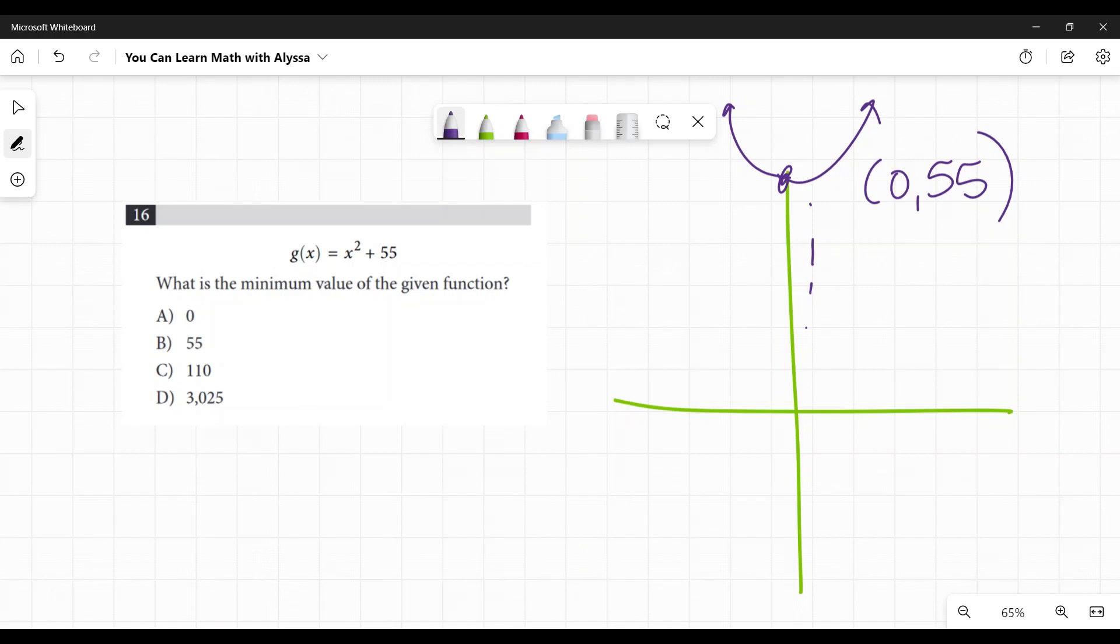Nothing else is changing. The function isn't flipping upside down. There's no negative in front of it. It's just moving up 55. So the minimum value there, the y value is b, 55.